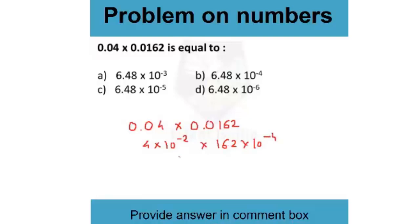Now calculate 4 × 162 = 648, and combine the powers: 10⁻² × 10⁻⁴ = 10⁻⁶. So the result is 648 × 10⁻⁶. Since the answer options start from 6.48, shift the decimal back two places to get 6.48 × 10⁻⁴.